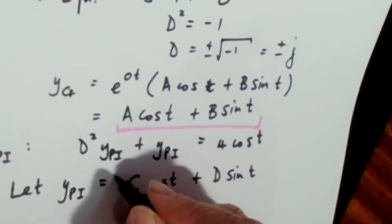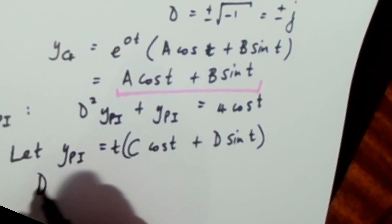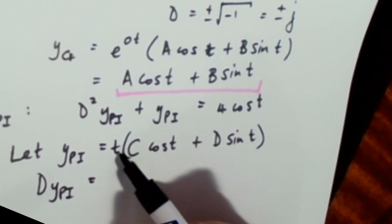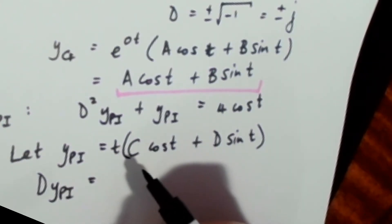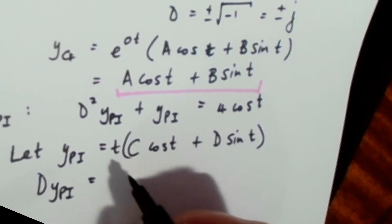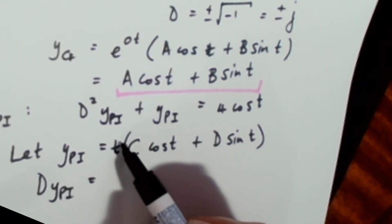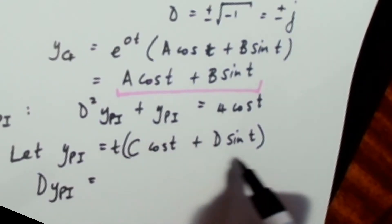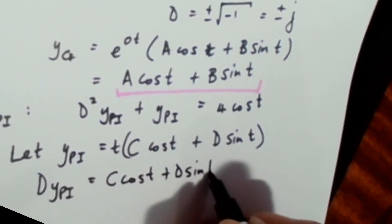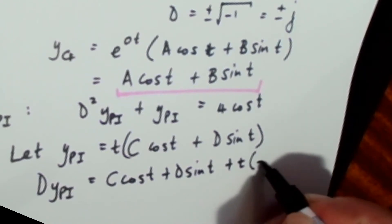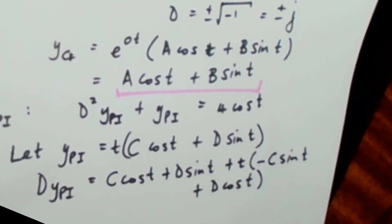The way we do that is we change it to y_pi = t(c cos t + d sin t). Then our first derivative involves a product of functions, so we need to use the product rule for differentiation. That's going to be the derivative of the first part times the second part, plus the first part multiplied by the derivative of the second part, giving us: c cos t + d sin t + t(−c sin t + d cos t).